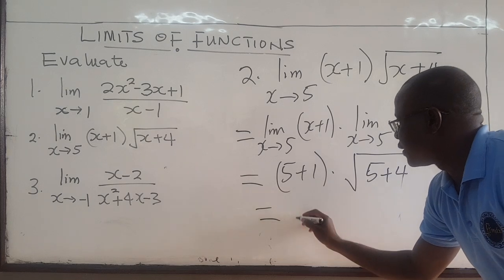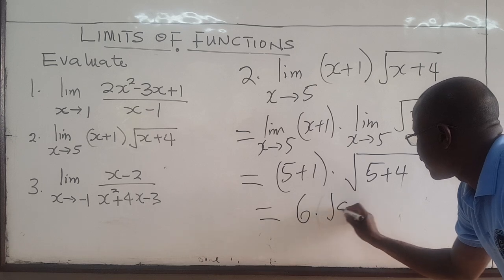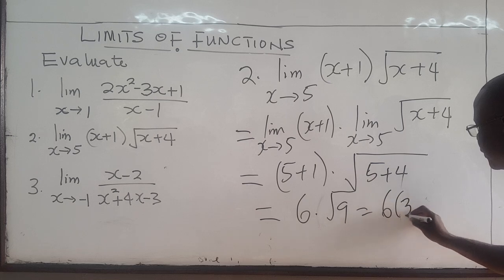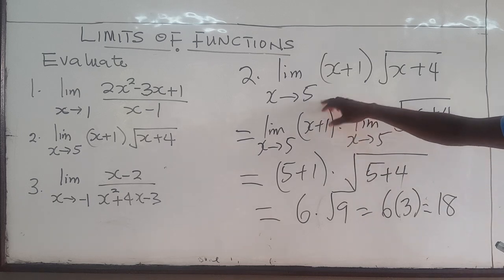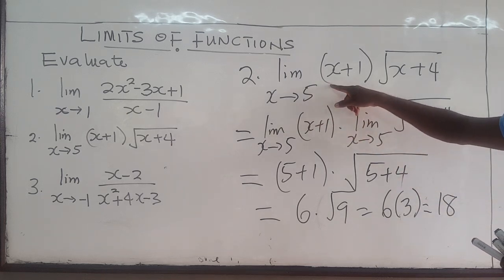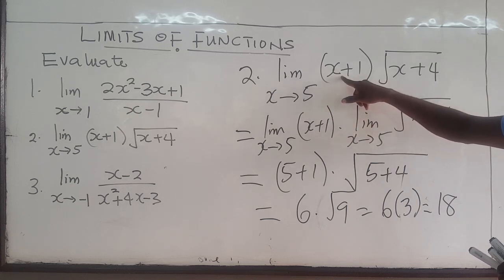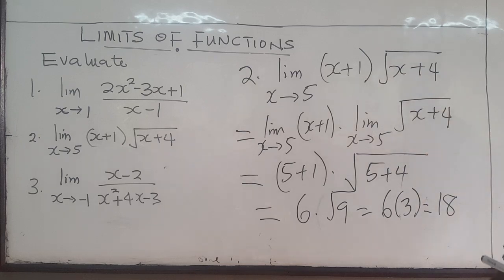So this gives us 6 multiplied by the square root of 9. The square root of 9 is 3, so 6 multiplied by 3 equals 18. The limit as x approaches 5 of this expression is equal to 18. Once you recognize that 5 is in the domain, you can plug in 5 directly: 5 plus 1 is 6, and the square root of 9 is 3, giving 18.